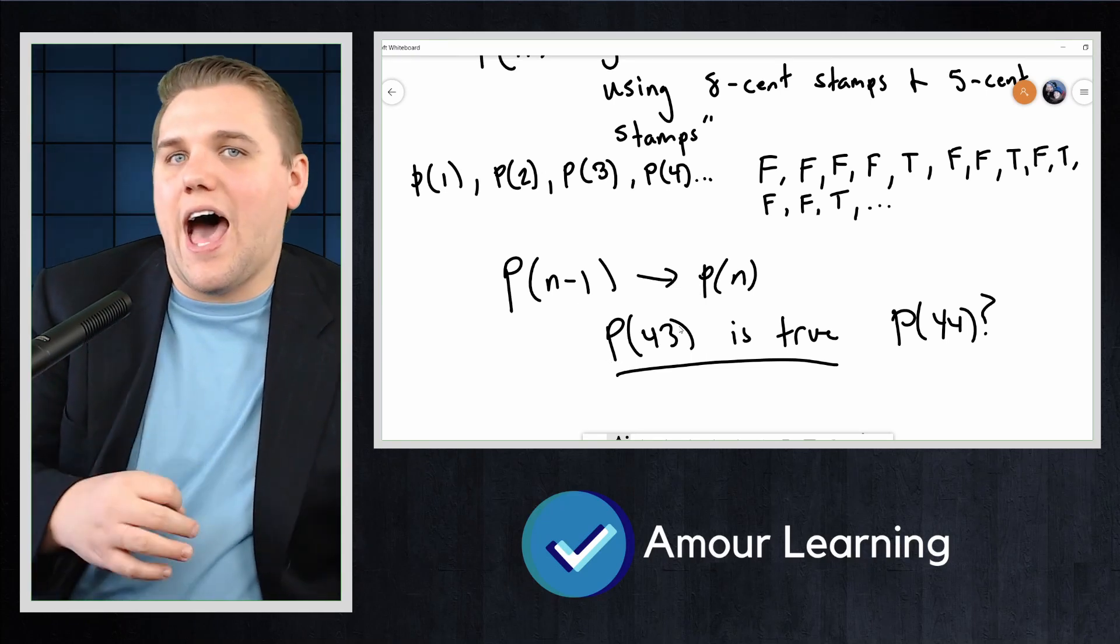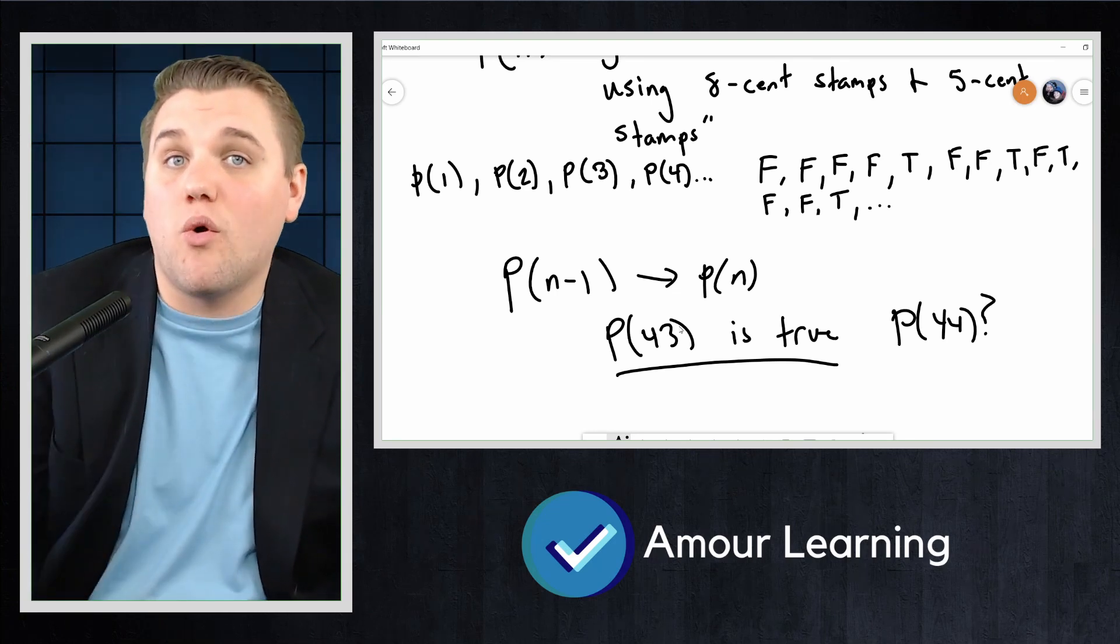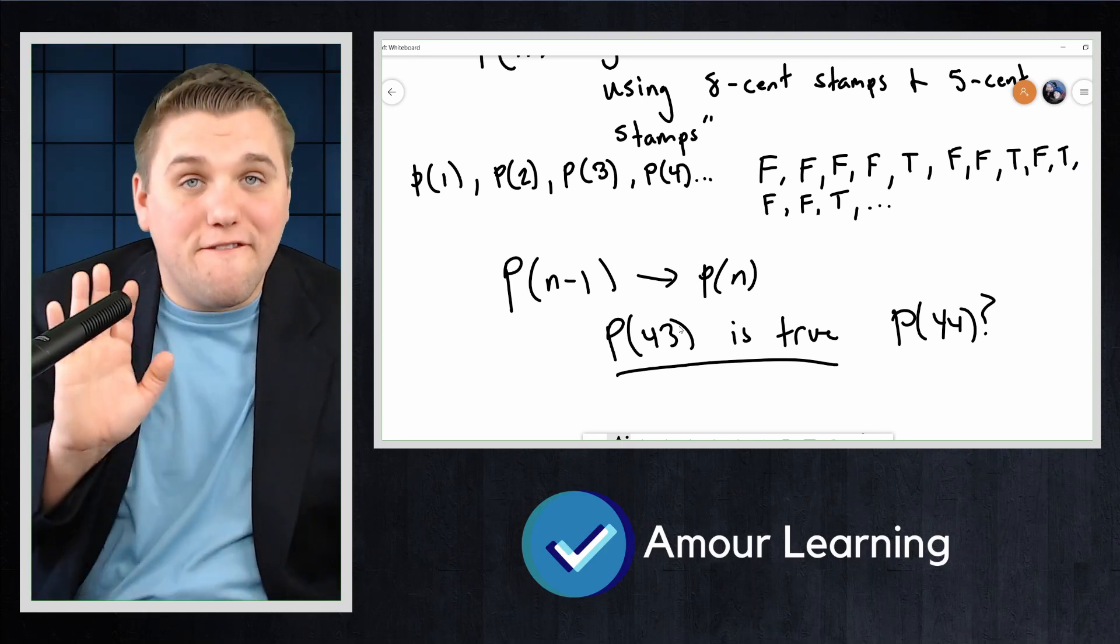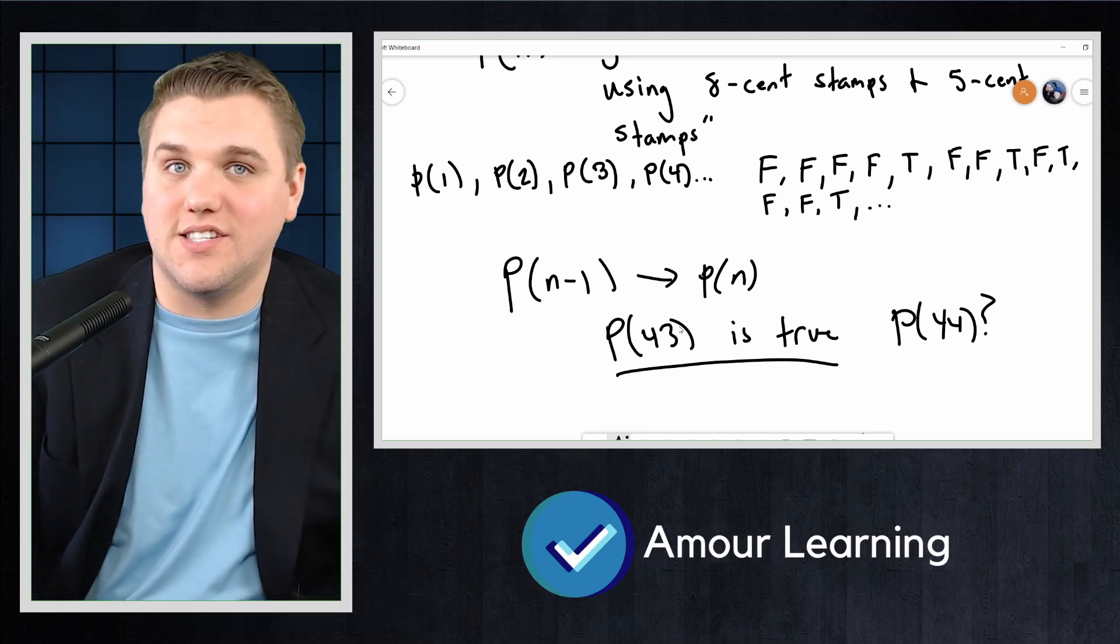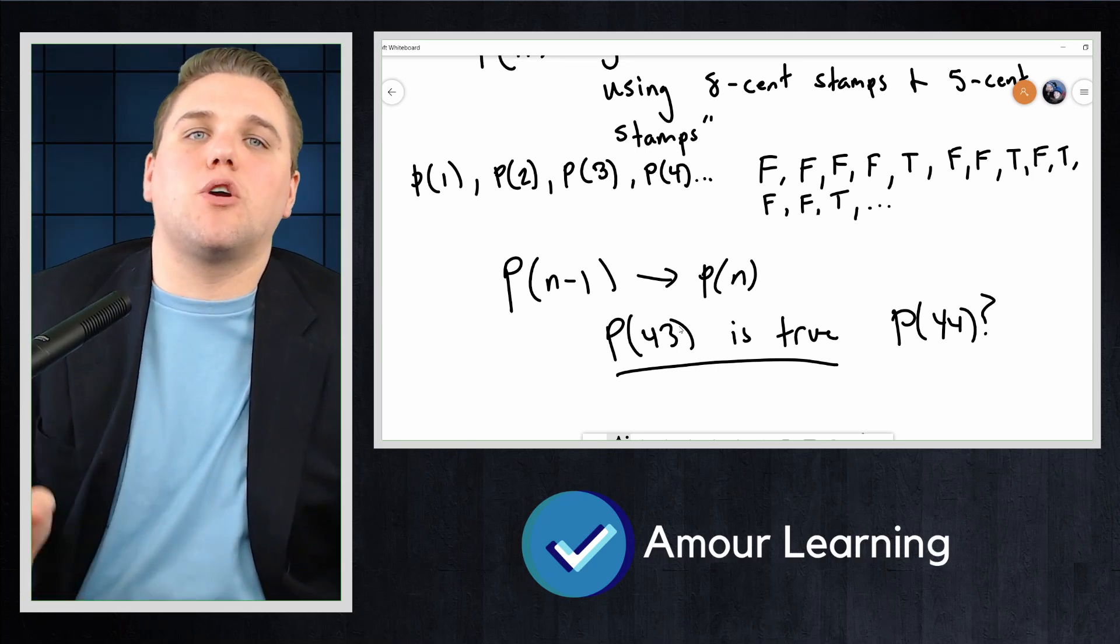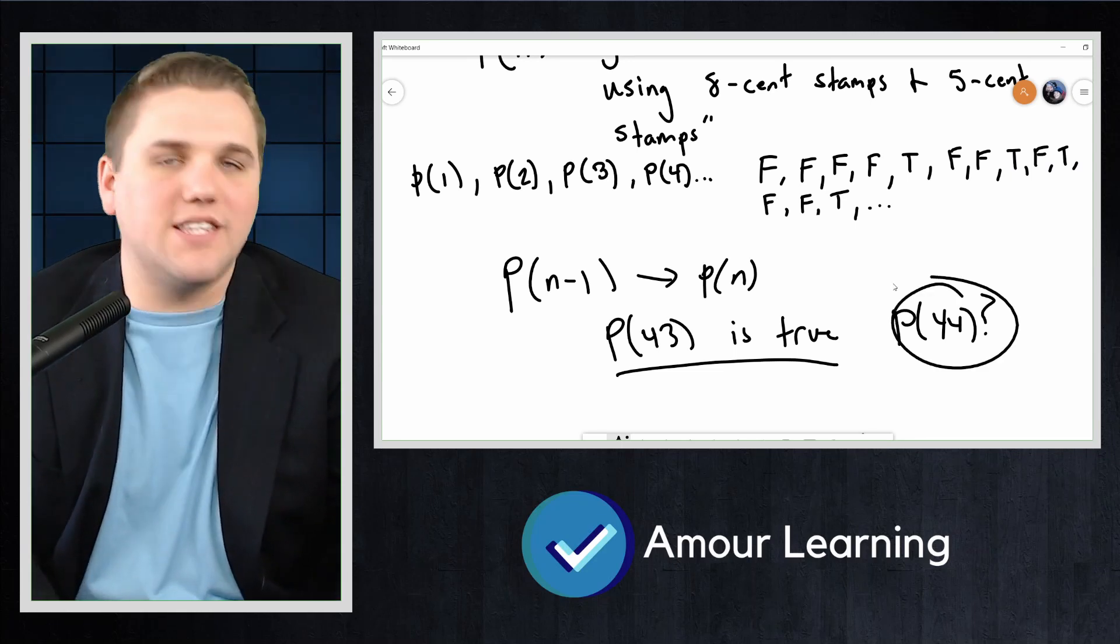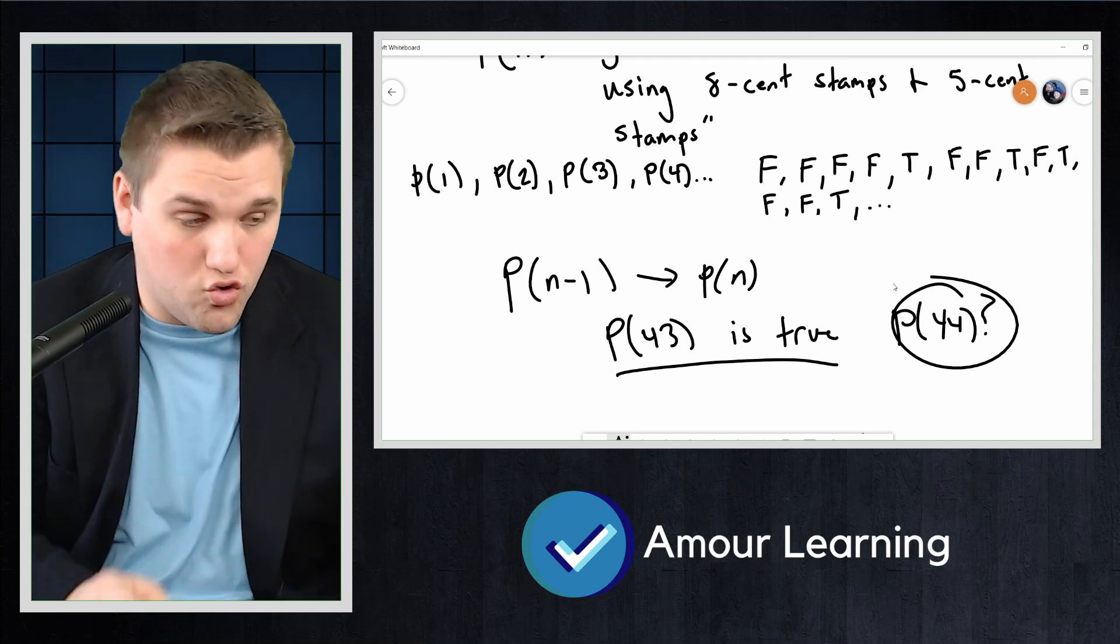Then we would have at least three 8-cent stamps, making 24 cents. We could replace those three 8-cent stamps with five 5-cent stamps, making 25 cents. Then again, we have bumped up our total by 1 cent, so we can make 44 cents. So P(44) is true.